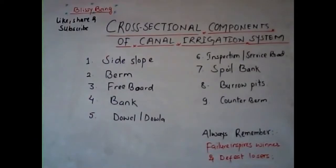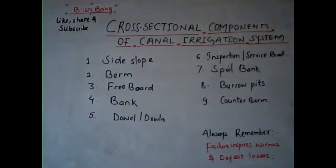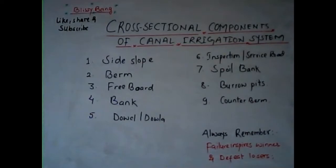Today we will be discussing the different cross-sectional components of a canal irrigation system. In this video we will be going through elements like the side slope, the berm, the freeboard, the bank, the dowel or dowla, the inspection or service road, the spoil bank, the borrow pits, and the counter berm.